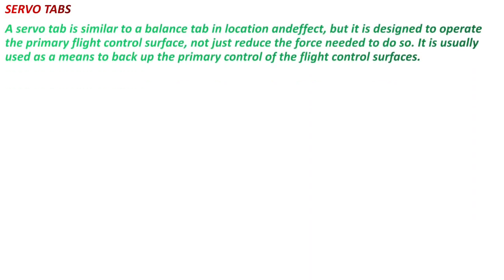A servo tab is similar to the balance tab in location and effect, but it is designed to operate the primary flight control surface, not just reduce the force needed to do so. It is usually used as a means to back up the primary control of flight control surfaces.